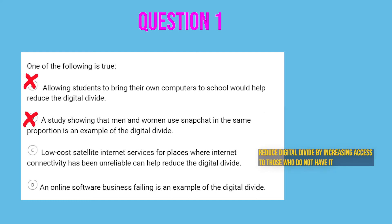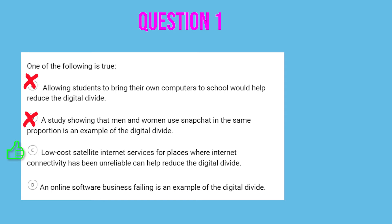Option C: low cost satellite internet services for places where internet connectivity has been unreliable could help reduce the digital divide. Yes, this is true — this is actually one of the ideas behind Starlink. It reduces the digital divide because it gives access to those who do not have it. Option D: an online software business failing is an example of the digital divide. This isn't true as it does not satisfy any of the principles we went over.